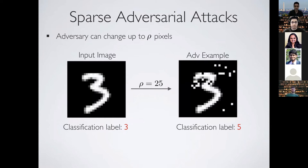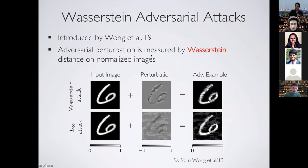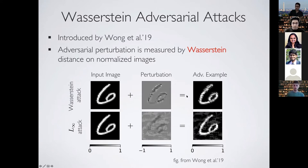One example of non-LP attacks is sparse adversarial attacks, where the adversary can change up to rho pixels in the image. Another example is Wasserstein adversarial attacks, introduced in 2019, where the adversarial perturbation is measured by Wasserstein distance on normalized images. You can think of Wasserstein as a distributional distance between two distributions — we normalize images to be represented as distributions and measure perturbation as a distributional distance between input and perturbed distributions.